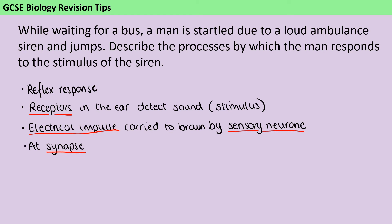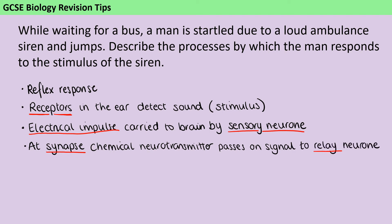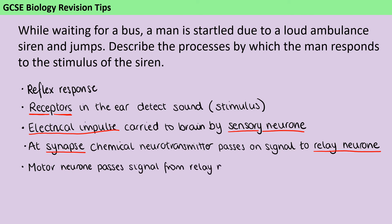At that synapse, there's a chemical called a neurotransmitter, which diffuses across the synapse to pass on the signal to the next neuron, which of course is the relay neuron. Then we have one more kind of neuron, which is the motor neuron, and that is going to pass the signal from the relay neuron to the effector. Effectors can be glands or muscles, but in this instance where a person is jumping, it's going to be a muscle.